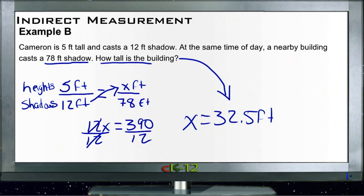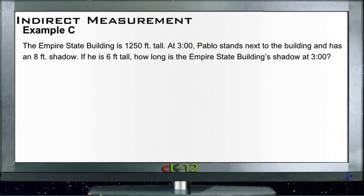Alright, example C. Example C, again very similar. This one says the Empire State Building is 1,250 feet tall. So let's start a height column here. We have 1,250 feet for the Empire State Building.